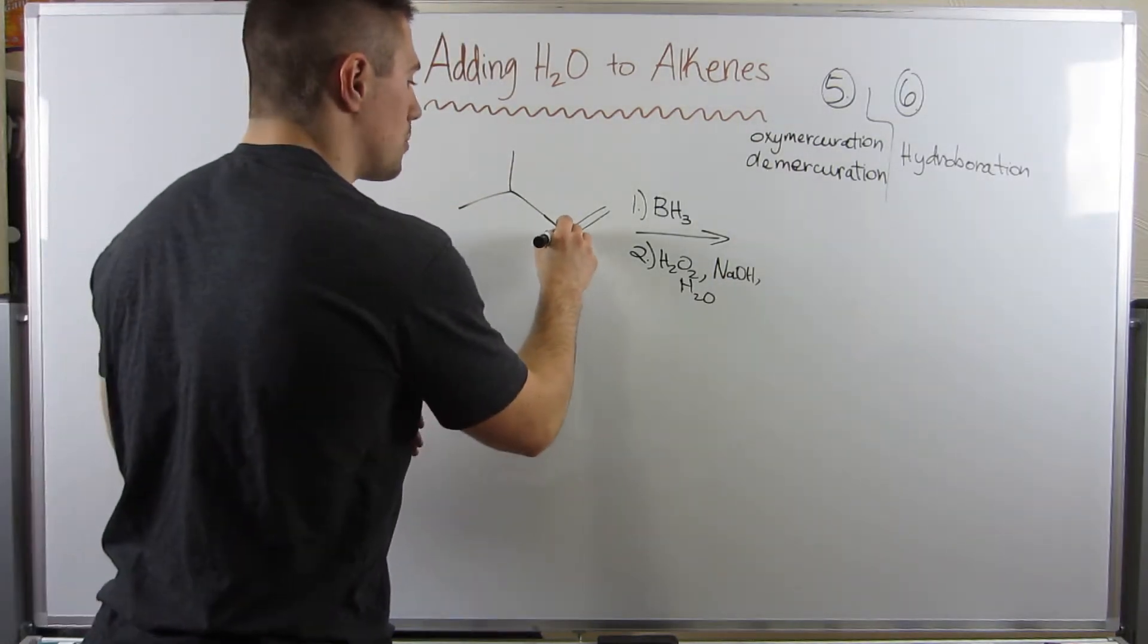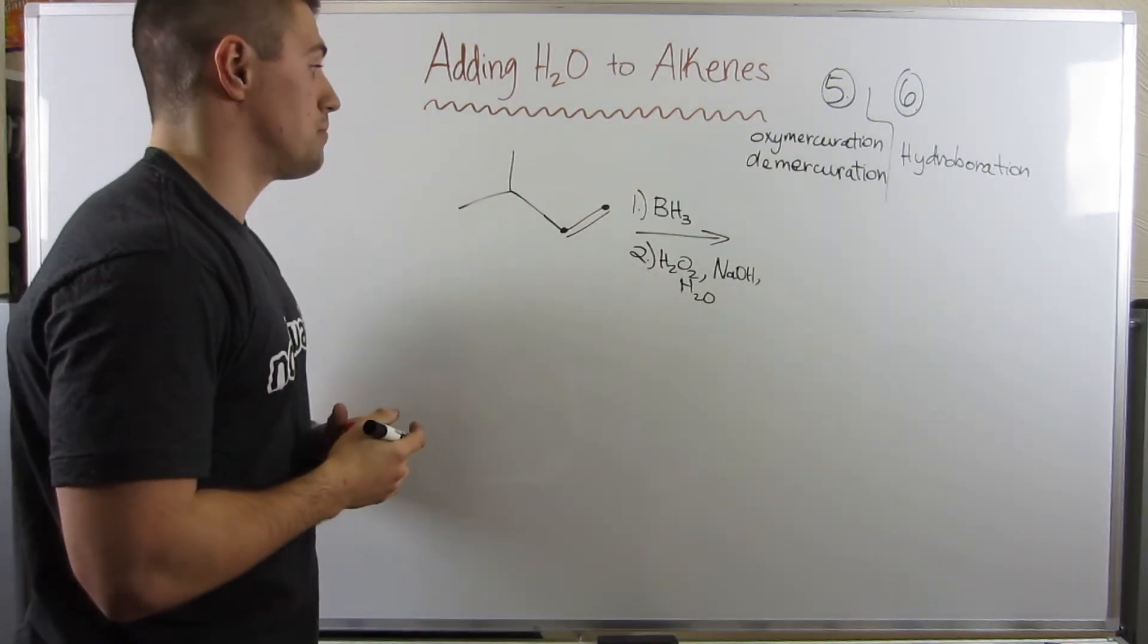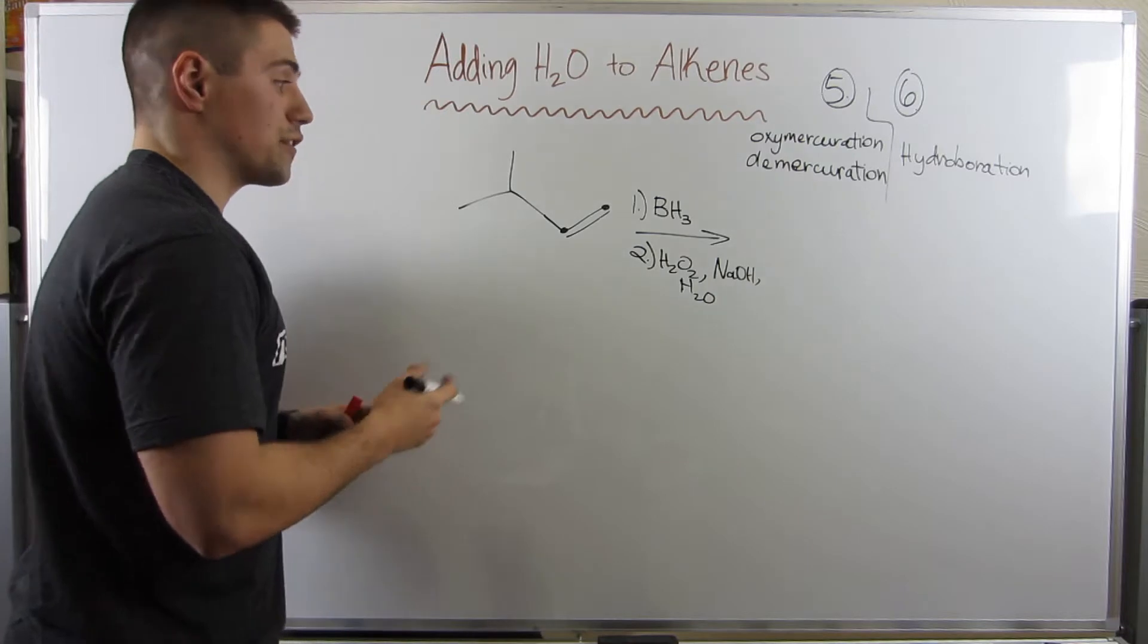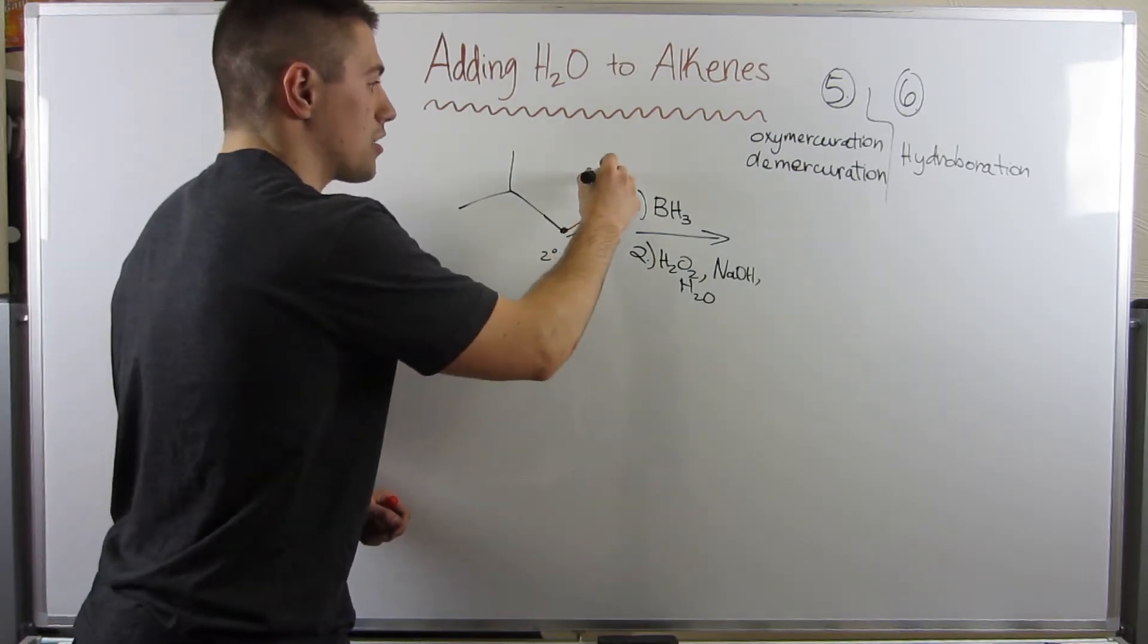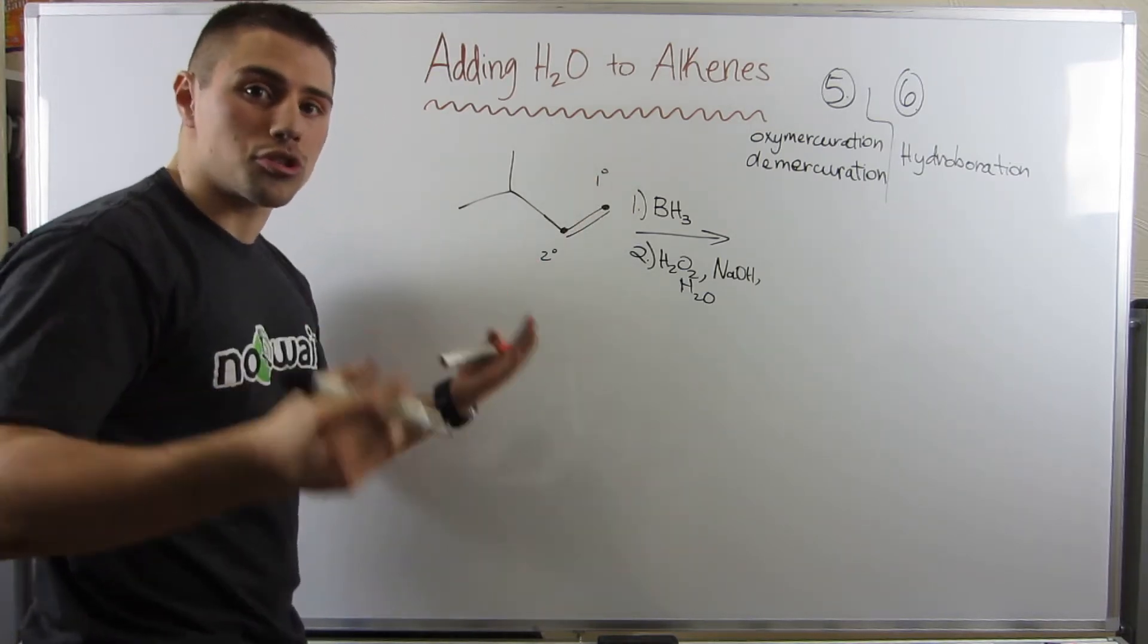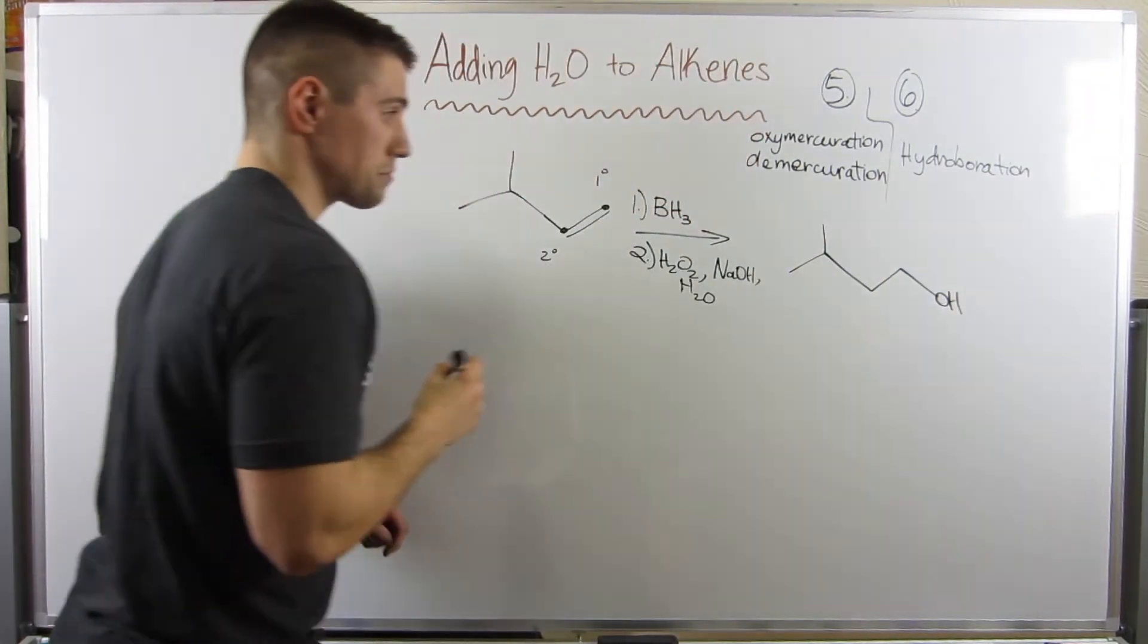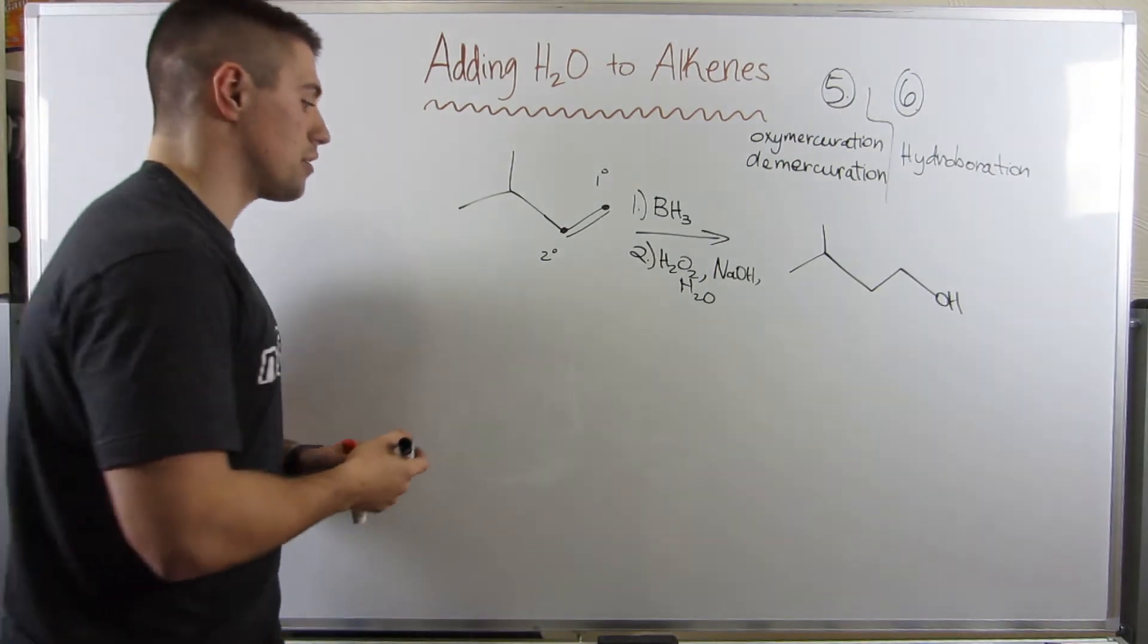Now, here's your thought process. You look at the two carbons apart of the double bond. Unlike oxymercuration demercuration, you're going to say, okay, this OH is going to go on the least substituted carbon, a part of this double bond. Forget this carbon, right? If we're looking at a secondary carbon and a primary carbon, it's going to go on the least substituted carbon, which is primary, kind of like the lower degree carbon. So, the product you can expect is this. And again, you don't need to know a mechanism for this.